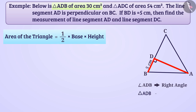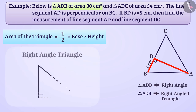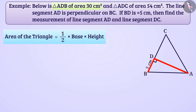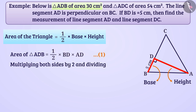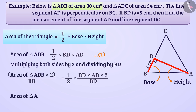In the case of a right angle triangle, we can consider one of the perpendicular sides as the base and the other as the height. Here, we will consider side BD as the base and side AD as the height. So, the area of triangle ADB is equal to half multiplied by BD multiplied by AD. We know the area and the measure of side BD, so we can find AD. Multiplying both sides by 2 and dividing by BD, we get: AD equals area of triangle ADB multiplied by 2, divided by BD.